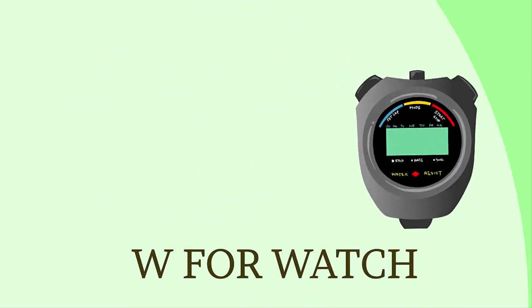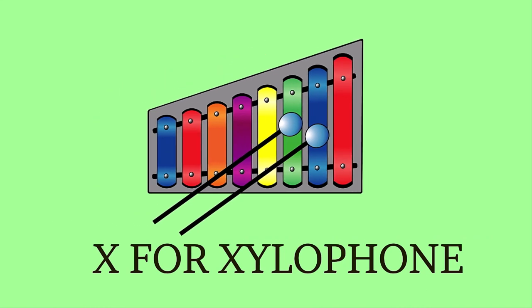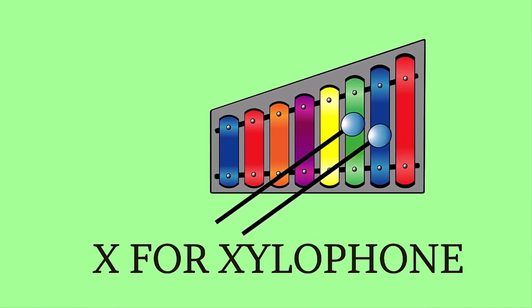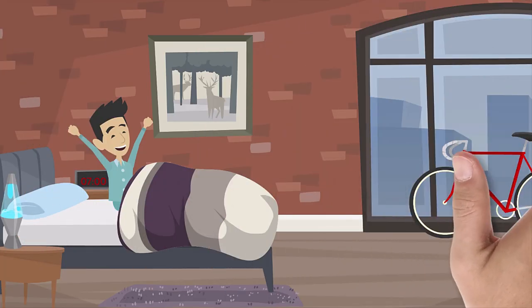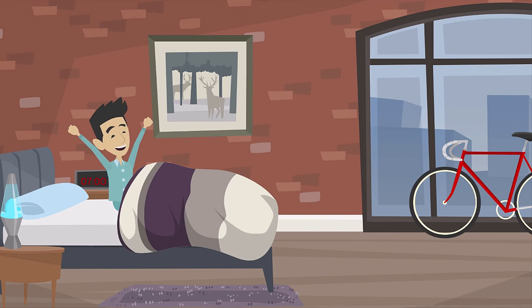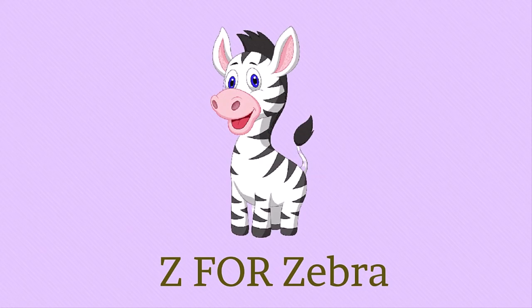X is for xylophone, z-z-xylophone. Y is for yellow, y-y-yellow. Z is for zebra, z-z-zebra.